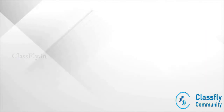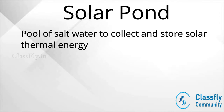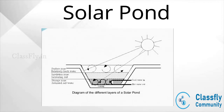The third type is the solar pond, a pool of salt water which collects and stores solar thermal energy. Solar radiations falling on the pond are absorbed by water at the bottom. It is necessary for the warm water to remain at the bottom and not rise to the top. This is achieved by artificially adding salt at the bottom of the pond; the salt dissolves in water and makes the water unable to rise to the top. This warm water at the bottom is then transferred for various applications.